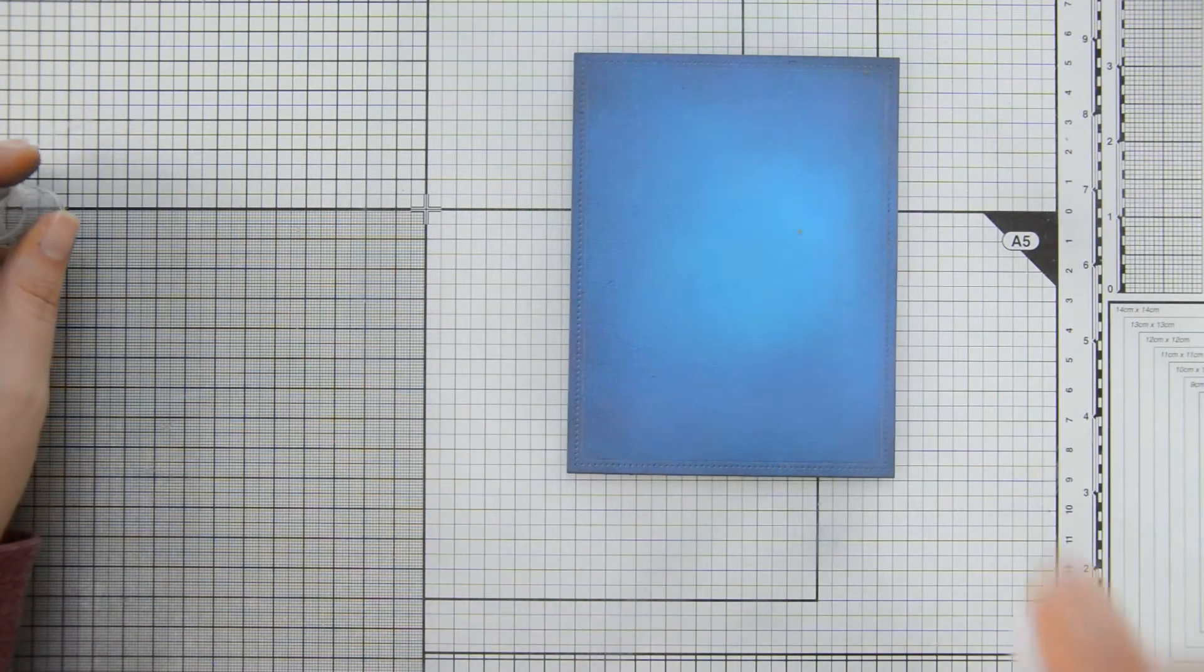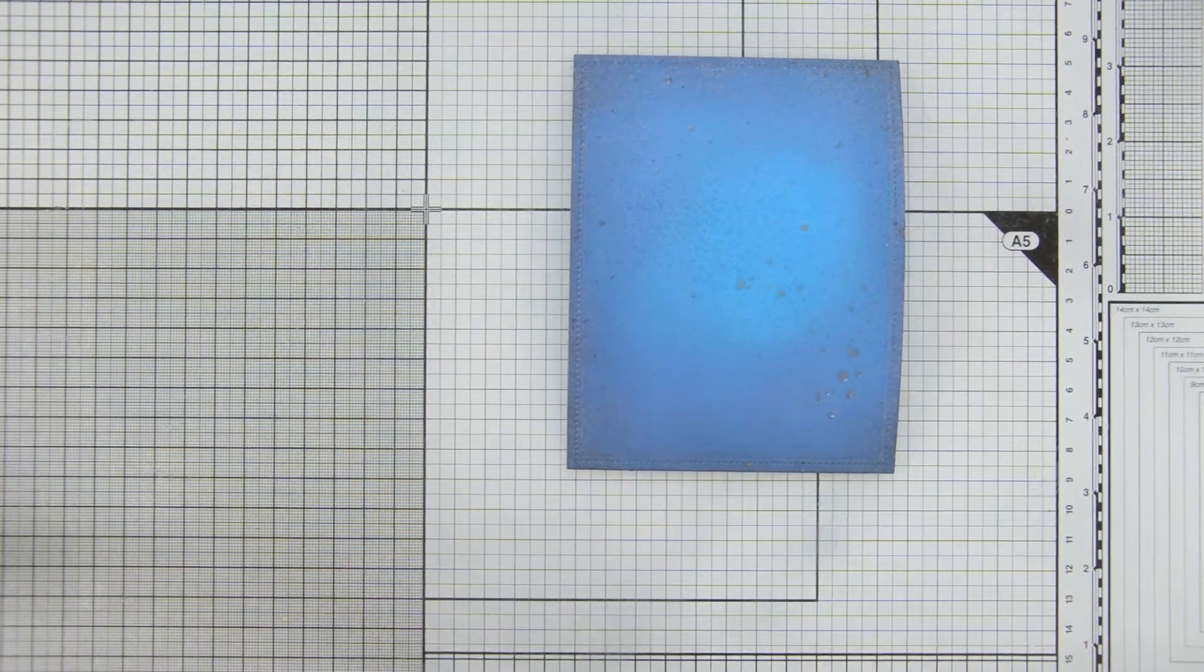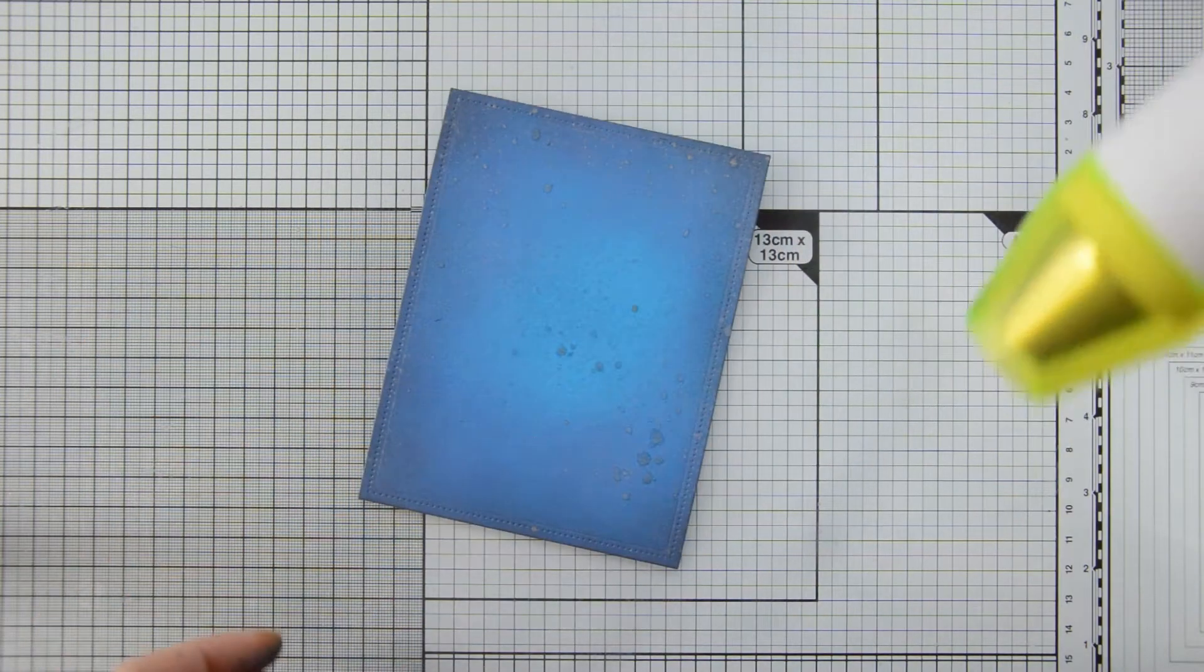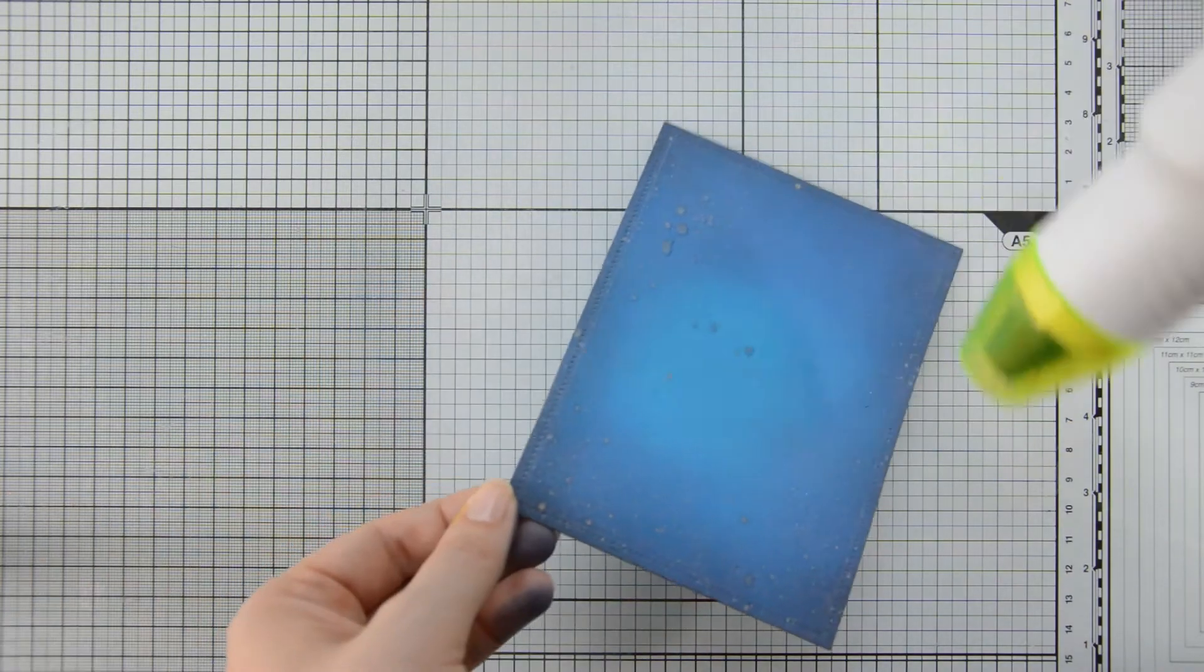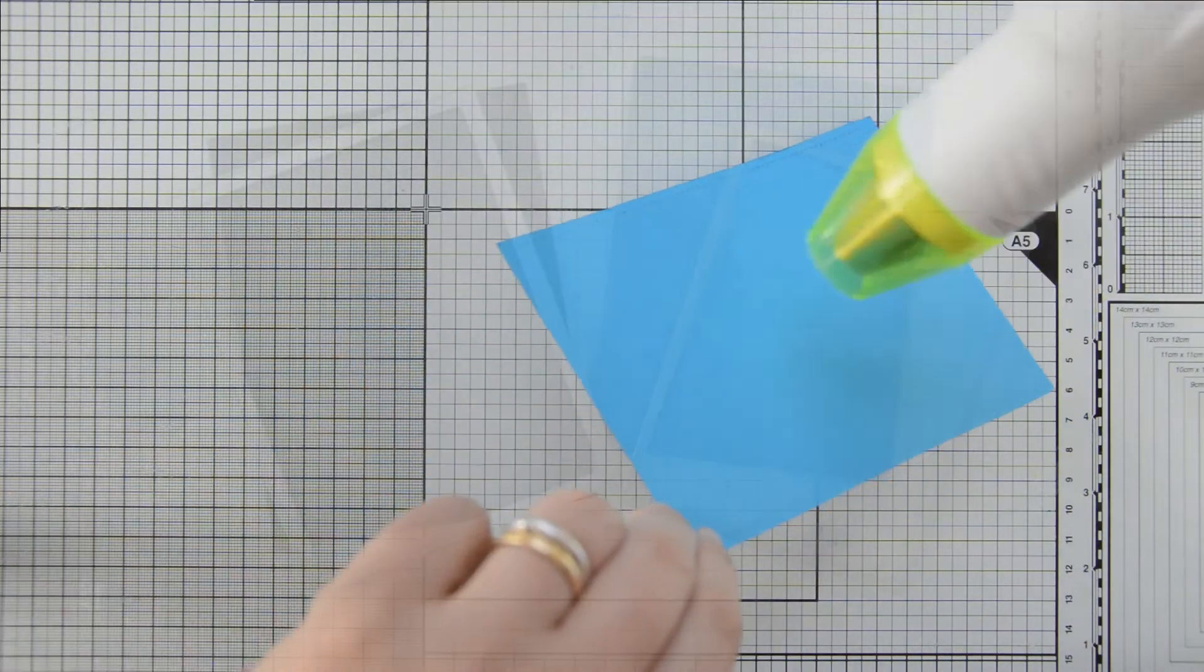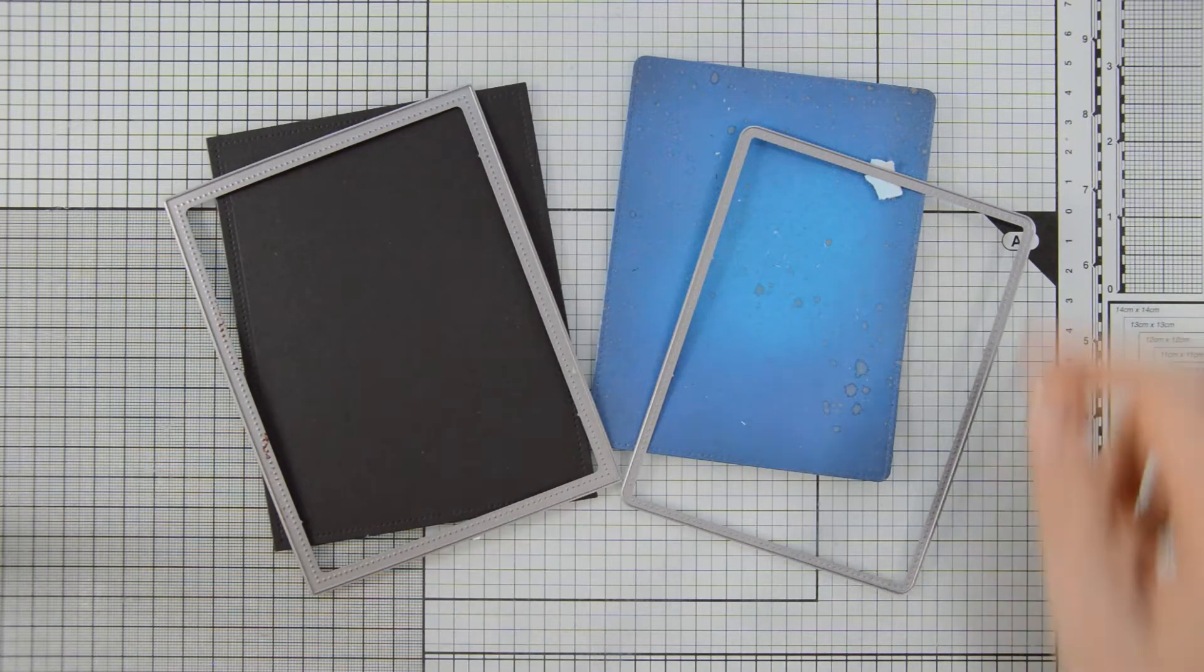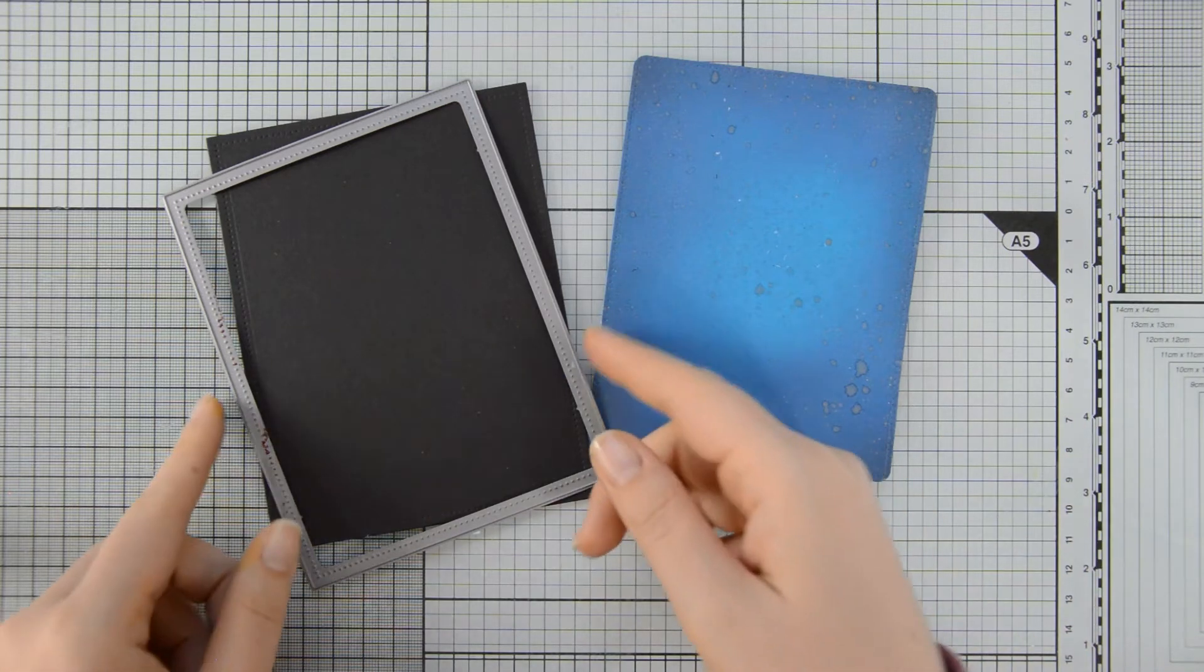Once I was done blending my inks, I added some stars with my Nouveau Mica Mists in Antique Gold. I sped up the drying process with a heat gun. And then I decided that I wanted to frame this panel a little bit. So what I did was I die cut my sky background with one of the dies in the Dotted Patterns Set 3 dies.